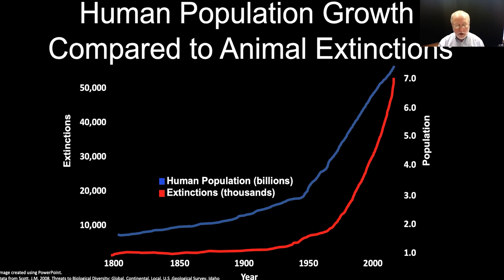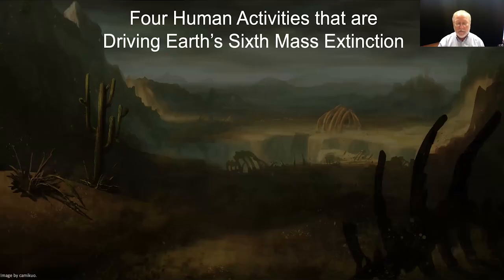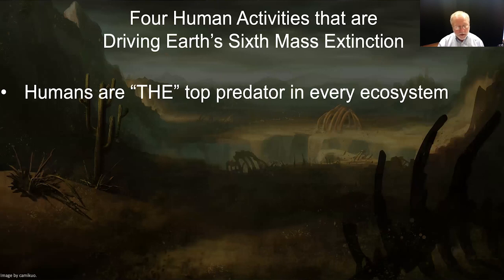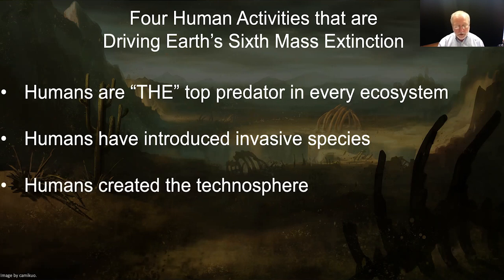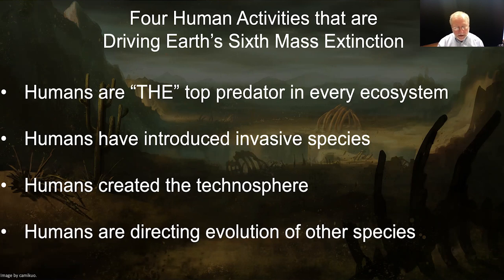As this graph shows, there is a strong correlation between the growth in the human population and the extinction of species. According to one team of scientists, there are four specific ways that humans are disrupting ecosystems and starting the sixth mass extinction: first, humans have become the top predator in every ecosystem; second, humans have caused the spread of invasive species across the Earth; third, humans have created something called the technosphere; and finally, humans are increasingly directing the evolution of other species. Individually, each one of these would cause significant ecosystem disruption, but the combined effect of all four is producing so much disruption that we are pushing toward a sixth mass extinction.